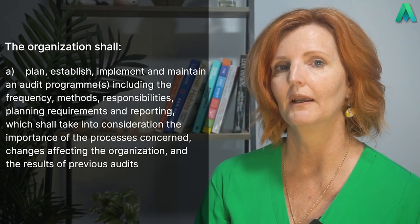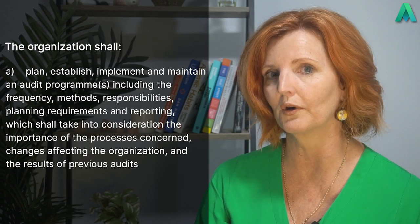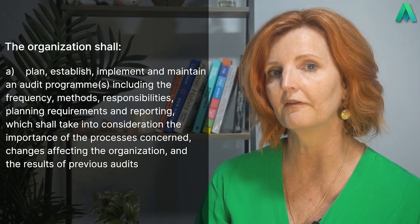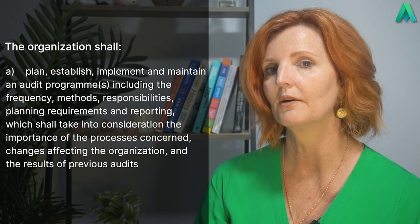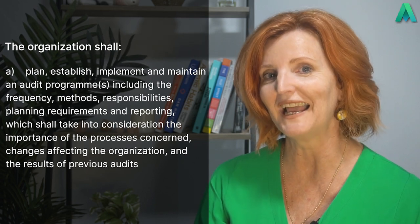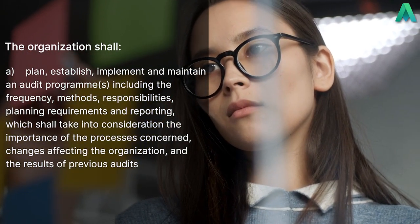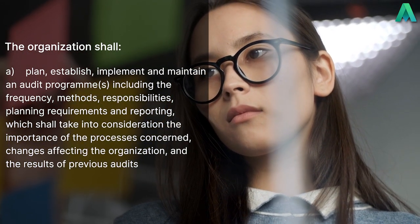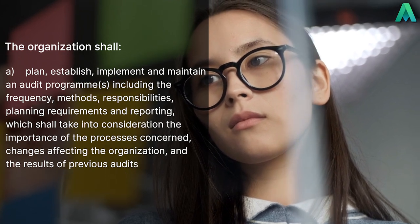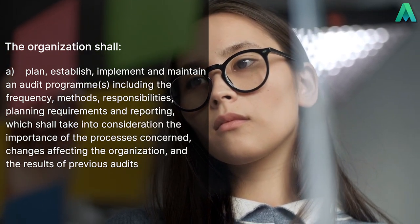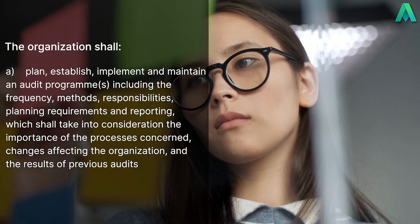We then move on to the second sub-clause 9.2.2, where it states that the organisation shall: a, plan, establish, implement and maintain an audit program, including the frequency, methods, responsibilities, planning requirements and reporting, which shall take into consideration the importance of the processes concerned, changes affecting the organisation and the results of previous audits.